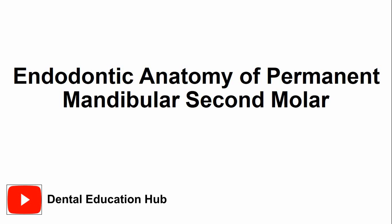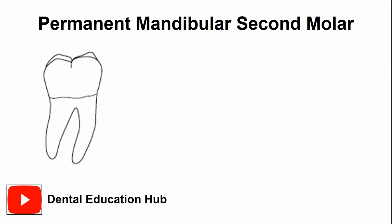Dear friends, welcome to Dental Education Hub YouTube channel. Today we are going to study the endodontic anatomy of the permanent mandibular second molar. This is the mesiodistal outline of the permanent mandibular second molar, and this is the mesial pulp horn.